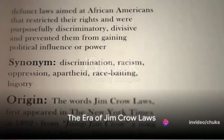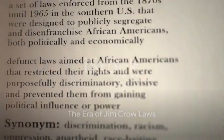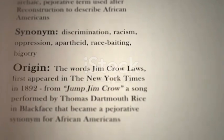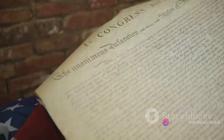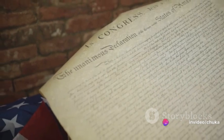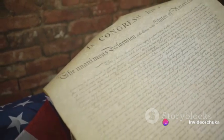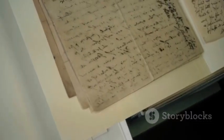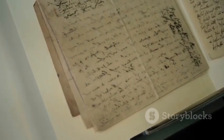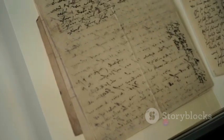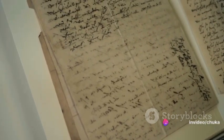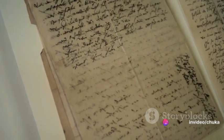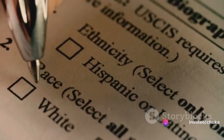Following the ratification of the 15th Amendment, southern states implemented what came to be known as Jim Crow laws. These laws, enforced from the late 19th century until the mid-20th century, systematically disenfranchised African Americans despite the amendment's clear mandate. Tactics such as literacy tests, poll taxes, and grandfather clauses were used to circumvent the 15th Amendment and deny African Americans their rightful vote.